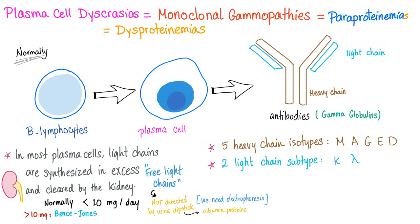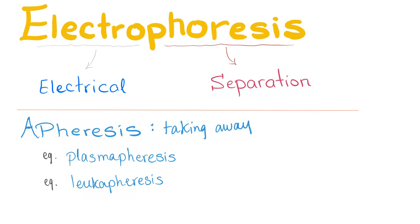Regarding gamma globulins: there are five heavy chain isotypes and two light chain isotypes. Normally, light chains are found in the urine but should be less than 10 mg. More than 10 mg is usually pathological — we call them Bence-Jones proteins. They are not detected by dipstick, but are detected by electrophoresis. The word electrophoresis means electrical separation — not to be confused with apheresis, which means taking away, as in plasmapheresis and leukapheresis.